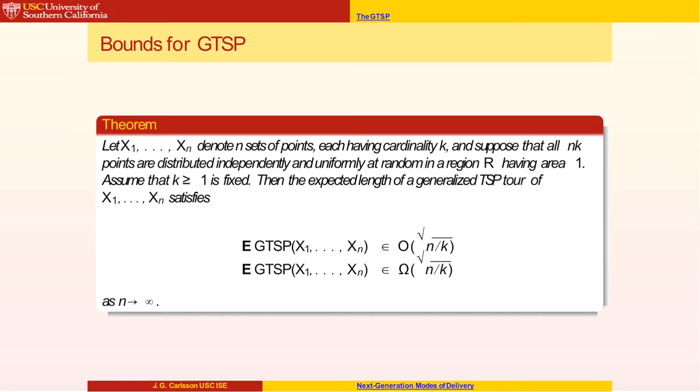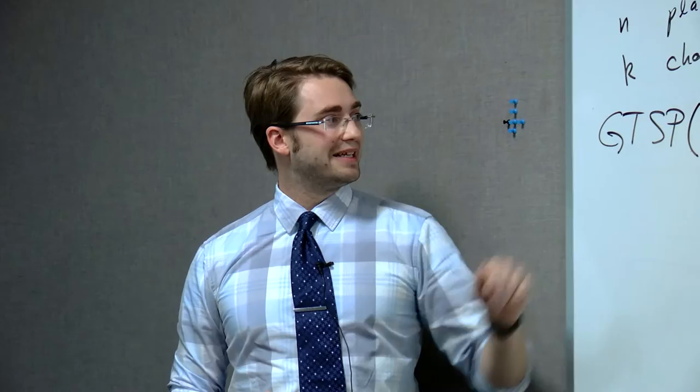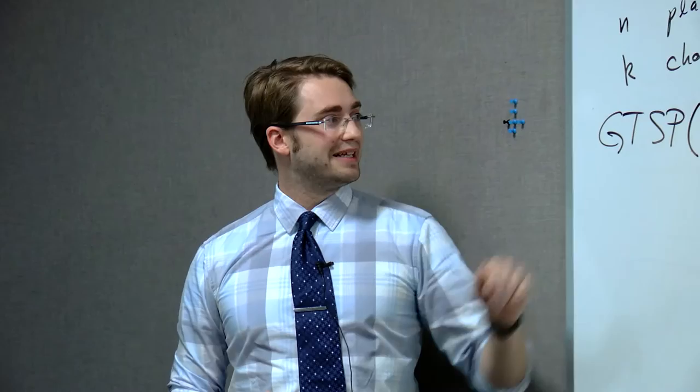So whatever 1 minus 1 over root 2 is. We proved that the generalized traveling salesman tour of N sets of K points each is proportional to root N divided by root K.